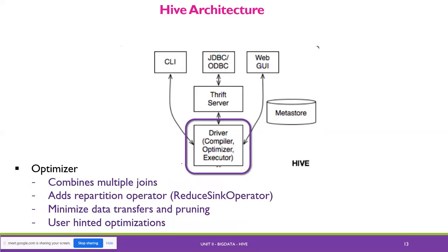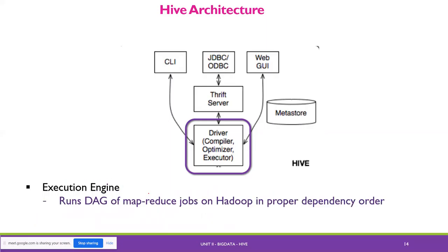The Optimizer combines multiple joins, adds partition operators, minimizes data transfers and tuning, and uses hinted optimization. The Executor engine runs the DAG of MapReduce jobs in Hadoop in the proper dependency order. So these are the overall architecture components of Hive: external interface, Thrift server, Metastore, and the components driver, compiler, optimizer, and executor.